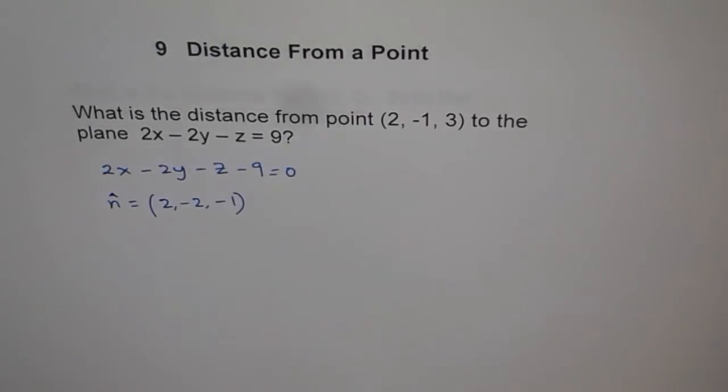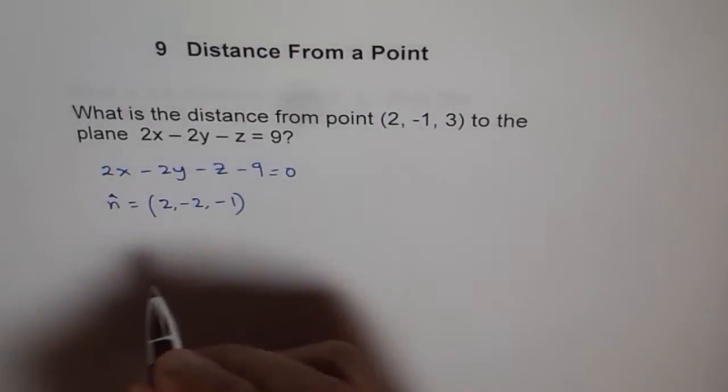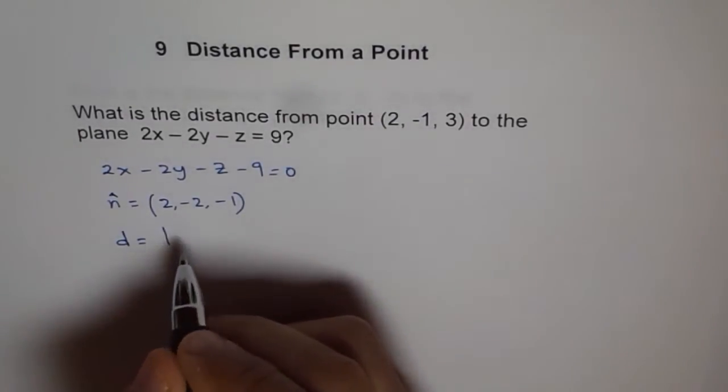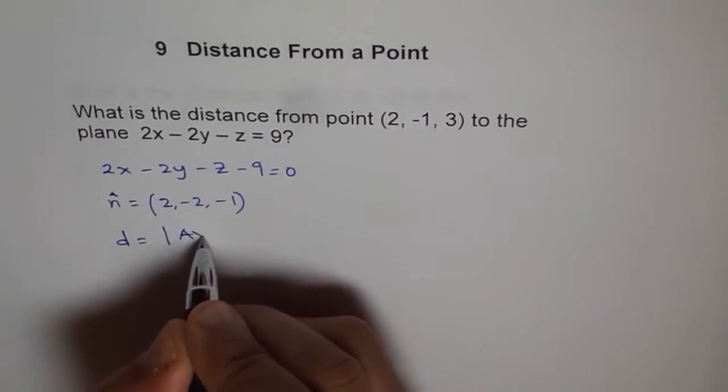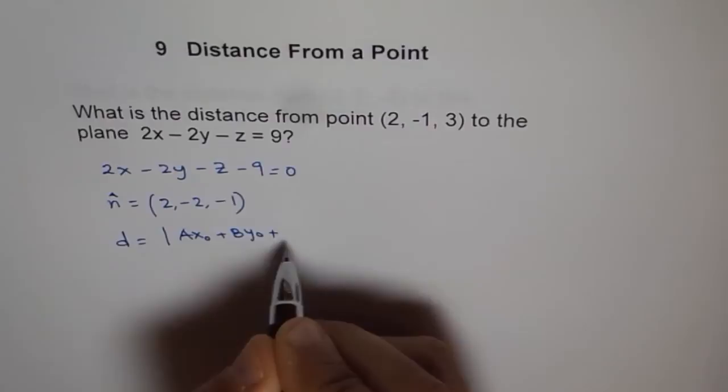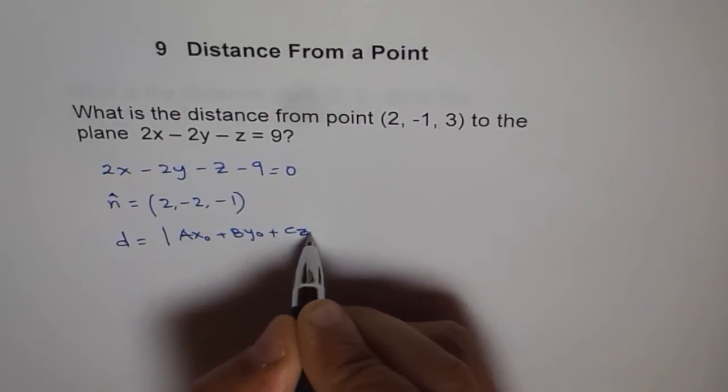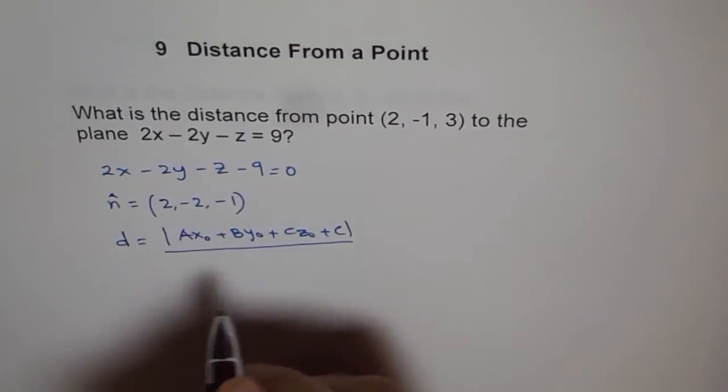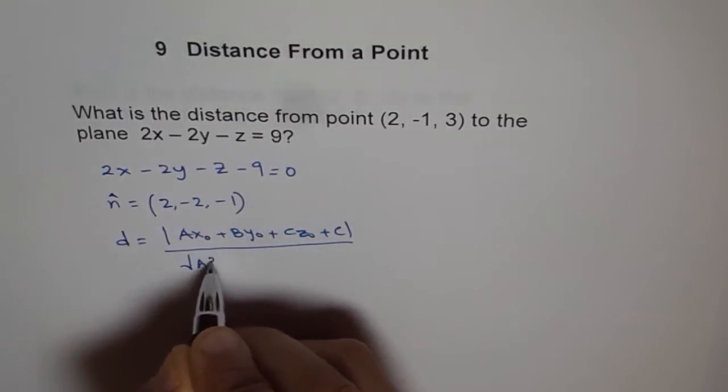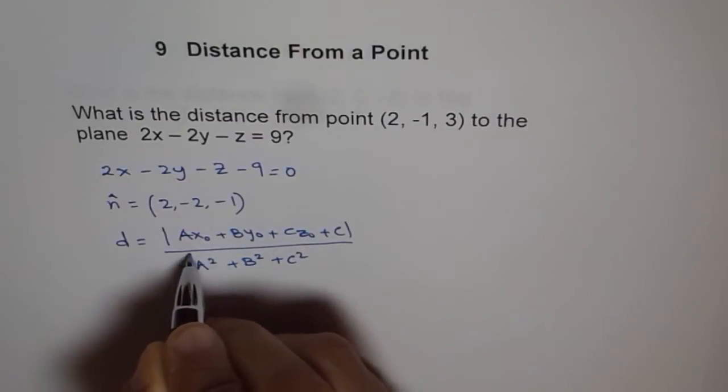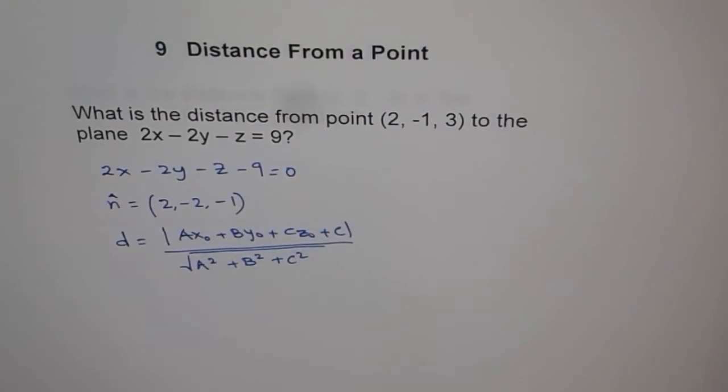That's the normal, and the distance formula is: distance equals absolute value of Ax₀ + By₀ + Cz₀ + D over square root of A² + B² + C². That's the distance formula.